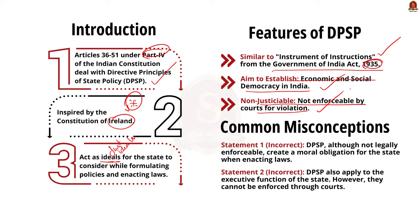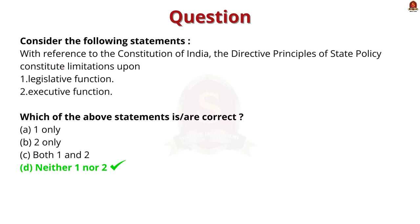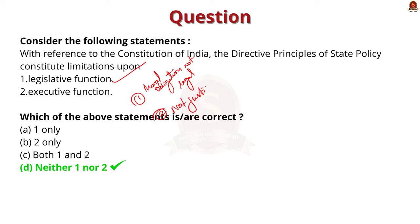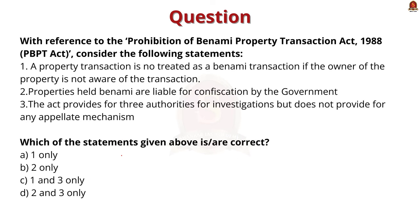The first statement says DPSPs constitute limitations upon legislative functions. Even though DPSPs pose a moral obligation on the state, they do not pose a legal obligation on the enactment of law — so this statement is incorrect. The second statement says DPSPs constitute limitations upon executive functions. DPSPs also do not pose any legal obligation on the executive function of the state; they are not justiciable in nature, meaning you cannot go to court asking for their enforcement. So the second statement is also incorrect. The correct answer is option D.